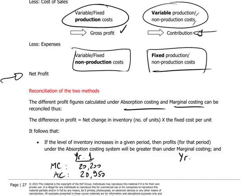For year two, the results were: marginal costing $29,400 and absorption costing $28,650.